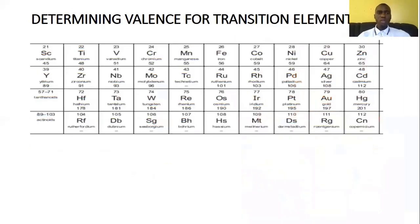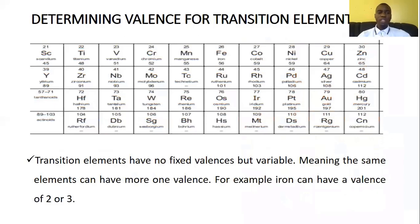Let's look at what we call the transition elements. So now we are saying transition elements have got no fixed valences, but variable. Now, this means that the same element can have more than one valence. For example, iron can have a valence of two. In some situations, it can be three. So they are called transition elements. Now, transition, the actual literal meaning, is to change. We are moving from this thing into the other. So that is how the valence of these elements also behaves. So it changes from this value to the other value, depending on the compound in which that element is being reacted or is being found.